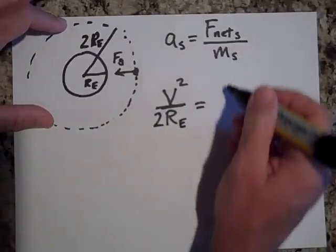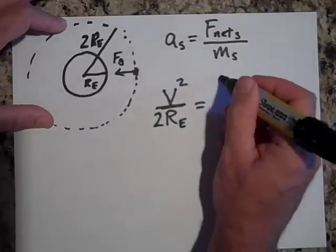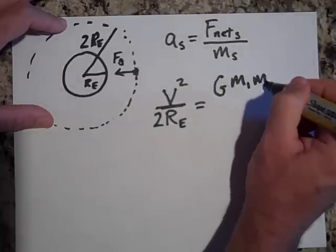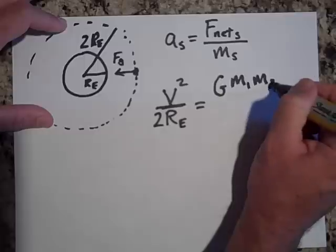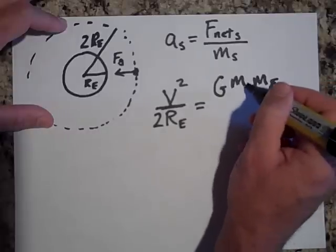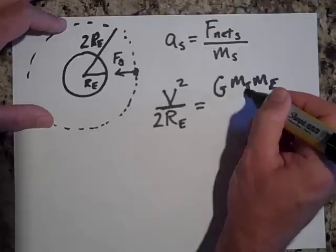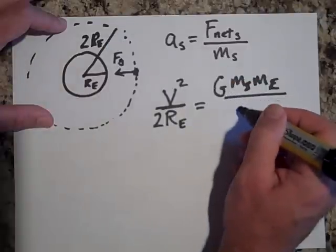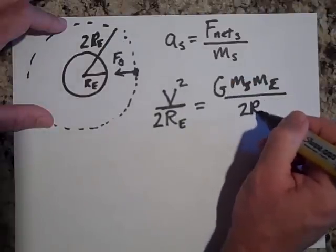That's equal to the net force. Now, the net force is just this force. Remember this guy? That would be the mass of the Earth. The second mass is the mass of the Earth. The first mass is the mass of the satellite. All over how far they are apart squared. So it would be 2RE squared.